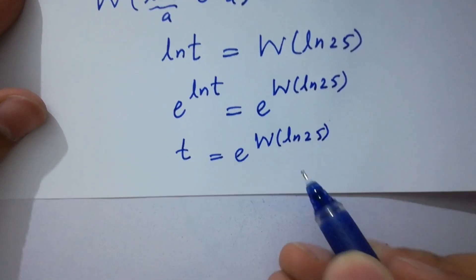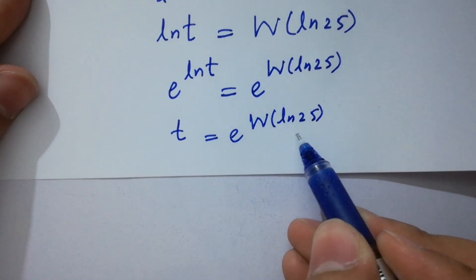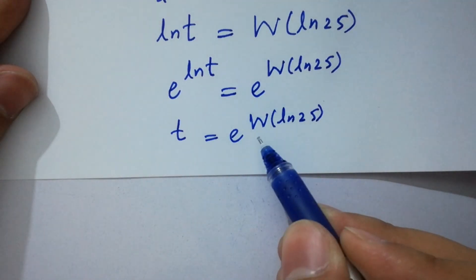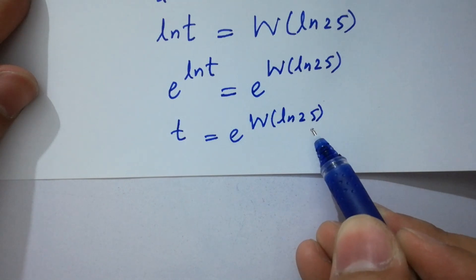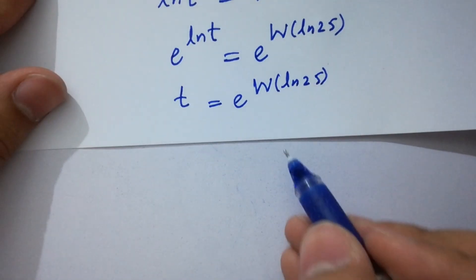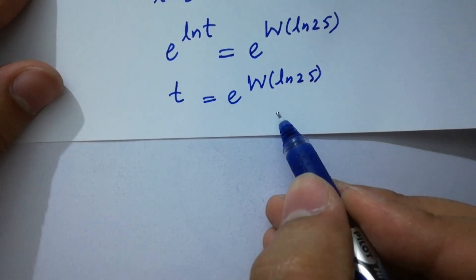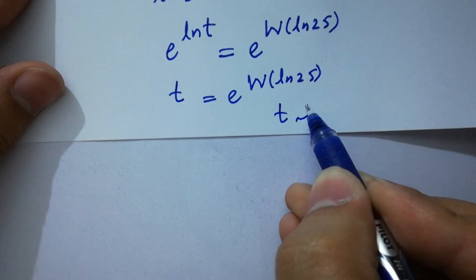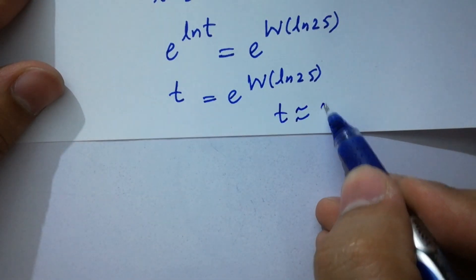So we have the value of t which is approximately equal to 2.963.